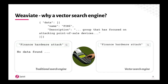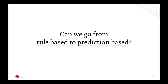However, when you do this in a vector search engine like Weaviate, it will actually return FIN6, because it knows there's a relation between finance, hardware, and attack based on a group that focuses on attacking point-of-sale devices. That is the most important added value of vector search engines like Weaviate, and as you will see in the demo, a lot of new use cases come from this.